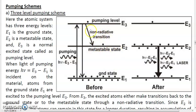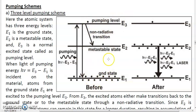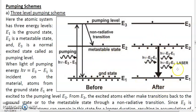Atoms that fall into the metastable state E2 through this non-radiative transition will tend to remain there for a long time — even up to 10⁻³ seconds — leading to an accumulation of atoms in E2. As more and more atoms are taken up and fall into E2, the number of atoms in E1 decreases because the total number of atoms is constant. Within a short time, there will be more atoms in E2 than in the ground state E1, and this is population inversion. Through pumping and accumulation in the metastable state, population inversion is achieved.